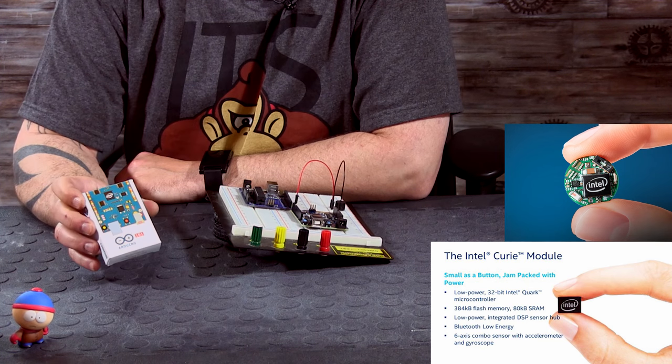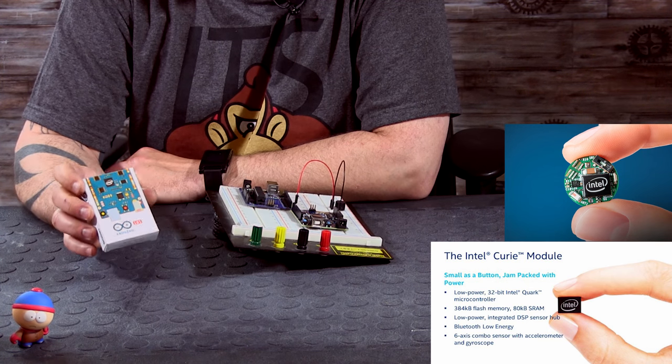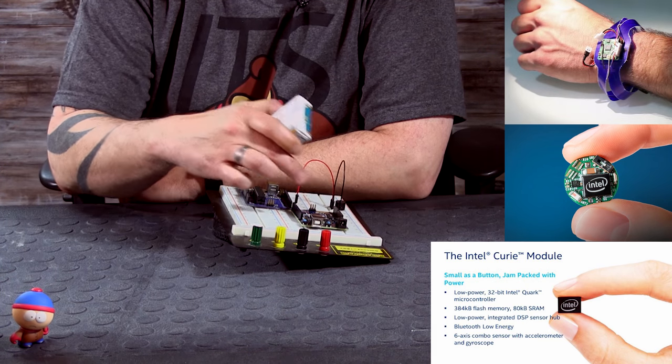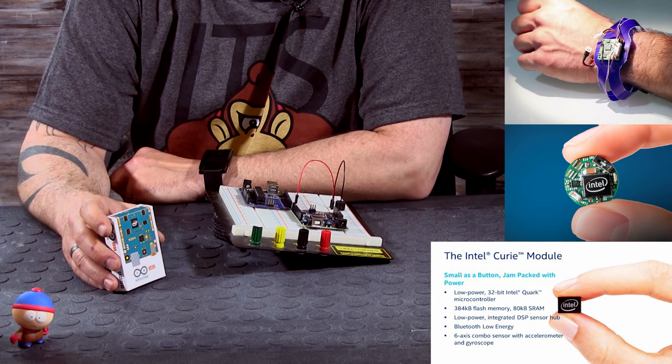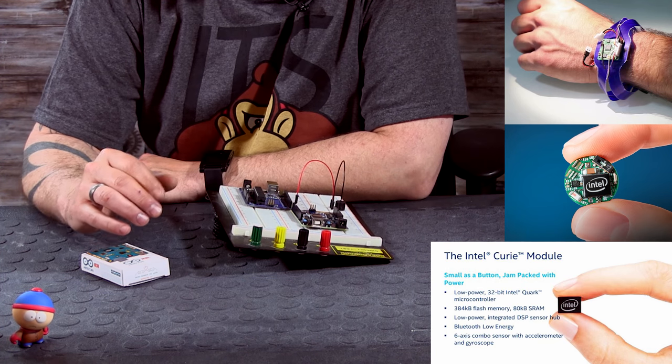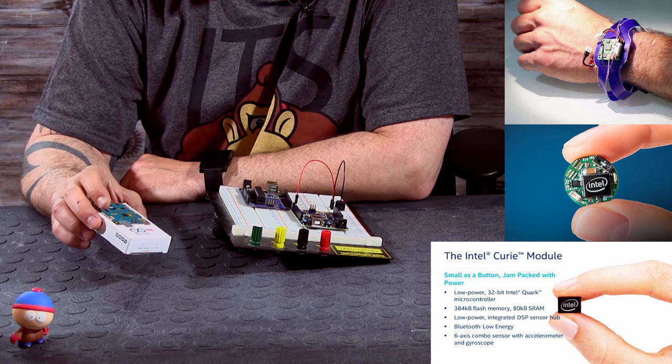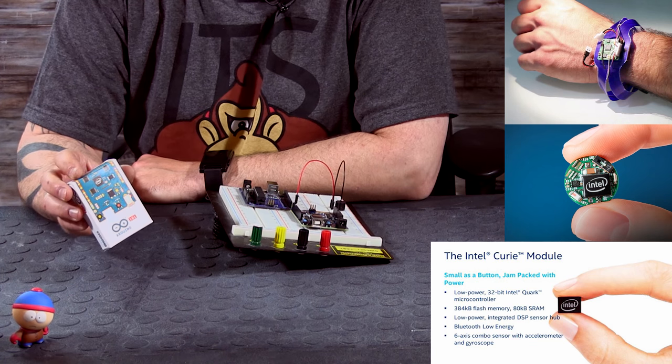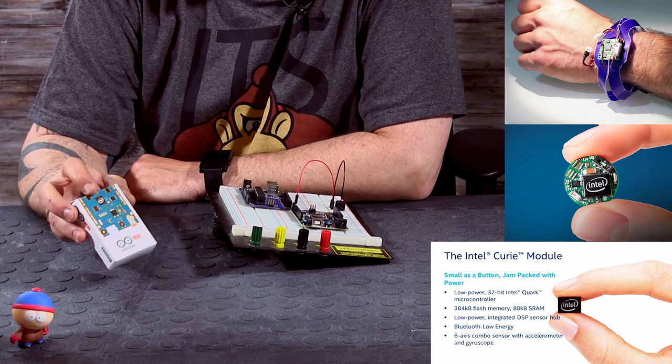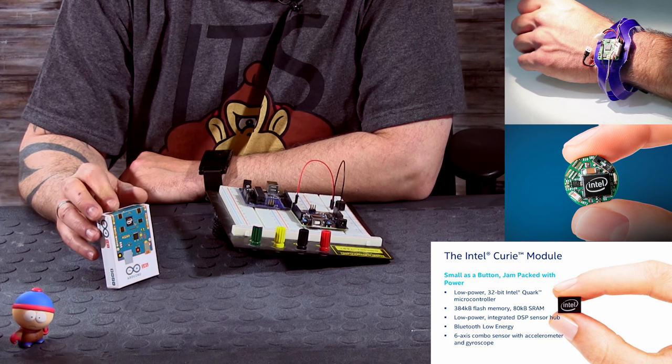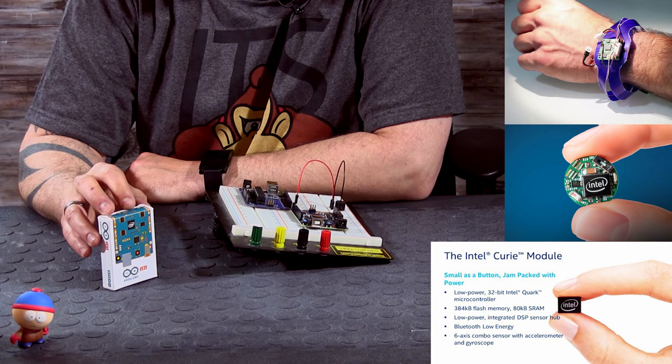Now if that's what you're interested in, then using the 101 to actually prototype and develop your code, and after that once everything is working on here, then you embed the Curie chip into a smaller PCB, and that's a great way to do it. So if you look at it that way, the Arduino 101 is great for that because it uses a chip that is low powered and is made to be powered by batteries, doesn't use a lot of energy, and the chip is very small and integrates all these sensors.